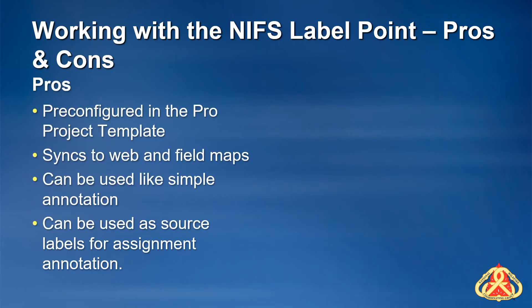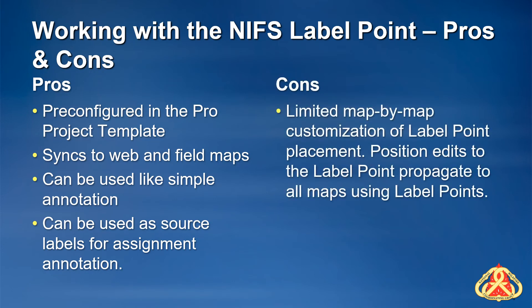The NIFS label point is a pre-configured part of the National Incident Feature Service and is built into the Pro project template distributed with the GeoOps folder structure template. Because it is part of the NIFS, it will sync to and provide labels in web, mobile, and browser maps. It can be used like simple annotation feature classes for labeling assignments on incident maps, and if need be, it is a great source for creating an assignment annotation feature class. While some map-by-map customization of the label point is possible through the labeling properties, position edits made to label point features will propagate to all other incident maps using the label point.